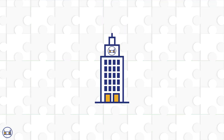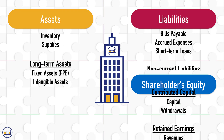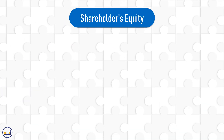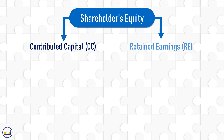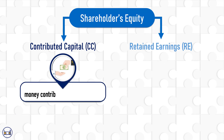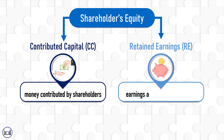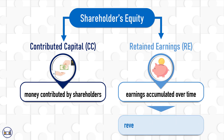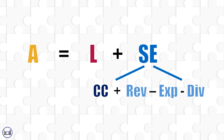A company has many different accounts within assets, liabilities, and shareholders' equity. For instance, shareholders' equity can be further broken down into retained earnings and contributed capital. Contributed capital is money that the founders, investors, and eventually other shareholders contribute by buying shares. Retained earnings is all the value the company has earned and accumulated over the years through its net income — revenues minus expenses — which can eventually be paid out to shareholders as dividends. So an expanded version of our accounting equation looks like this: Assets = Liabilities + Contributed Capital + Revenues − Expenses − Dividends.